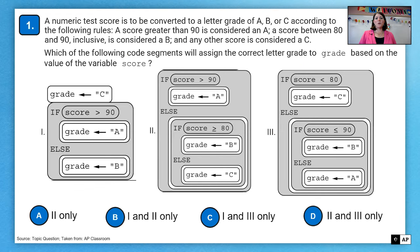Question one, a numeric test score is to be converted to a letter grade of A, B, or C according to the following rules. If the score is greater than 90, it's considered an A. If the score is between 80 and 90 inclusive, it's considered a B. And any other score is considered a C. Which of the following code segments will assign the correct letter grade to grade based on the variable score?